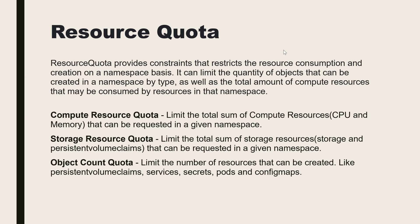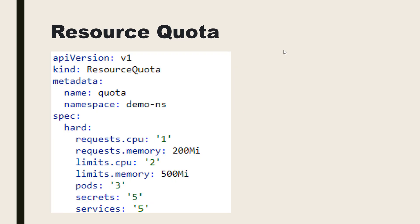By using the resource quota we can make sure that a namespace utilizes only a certain amount of resources defined in the resource quota on the particular node it's running on. Looking at this snippet, the API version is v1, kind is ResourceQuota. You provide the name and namespace in which you want to run it. Then you define the request CPU, request memory, limit CPU, and limit memory.